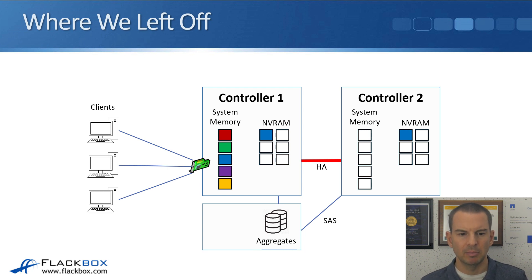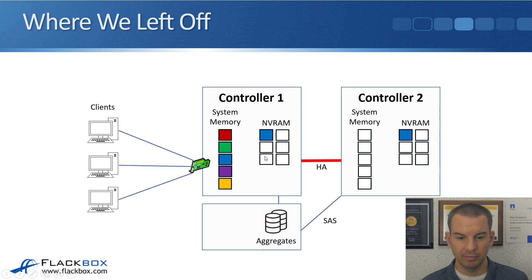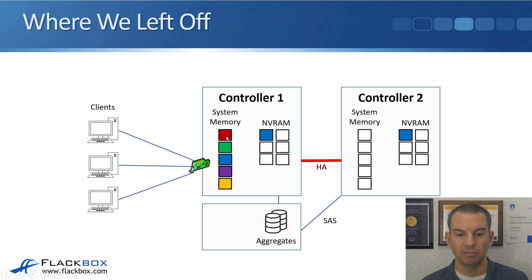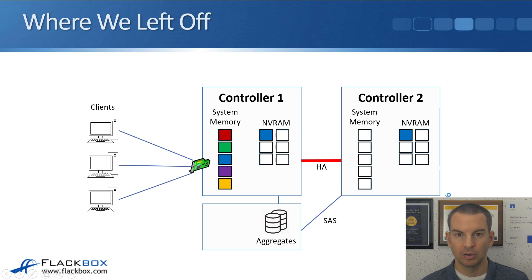That pretty much wraps up the summary of the last lecture. Looking at the diagram now, we've got a lot of data in system memory — system memory is actually full — and right now we've just got the blue data in NVRAM. We've done a consistency point quite recently; since then we've had one write for the blue data, and then read requests for the green data and the red data, which are at the top of the system memory cache. NVRAM still has quite a bit of space, but system memory is completely full.